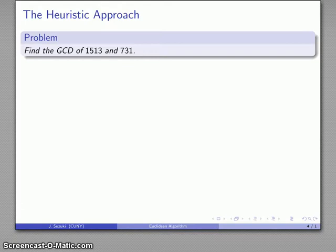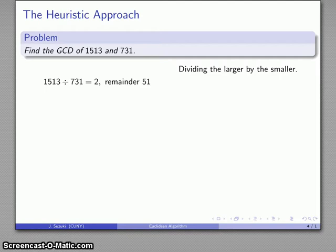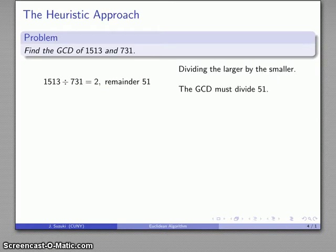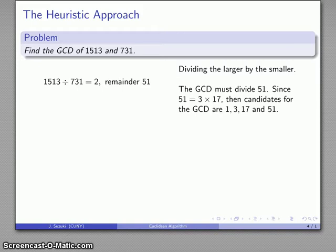For example, let's find the greatest common divisor of 1,513 and 731. Again, if you want to, you can try your hand at factoring these two numbers — they're not easy to factor. I can start the Euclidean algorithm, dividing the larger number by the smaller, and I get a remainder of 51. Now, if I was a computer incapable of thinking, I could just continue the algorithm. However, whatever the greatest common divisor is has to also divide this remainder 51. What makes this useful is that 51 doesn't have too many factors — it actually factors as the product of primes 3 and 17.